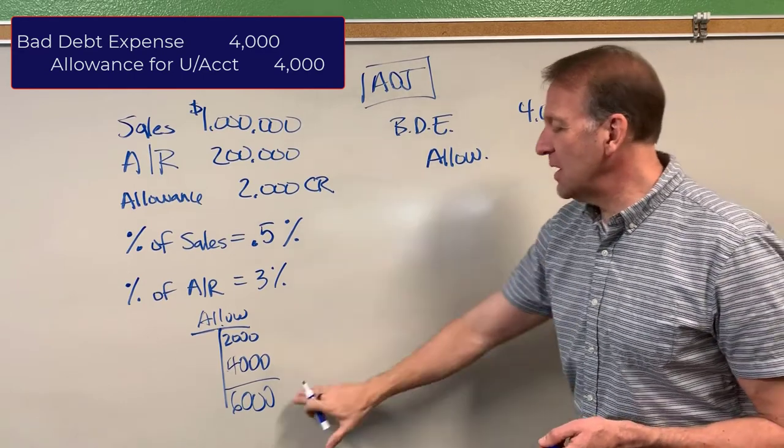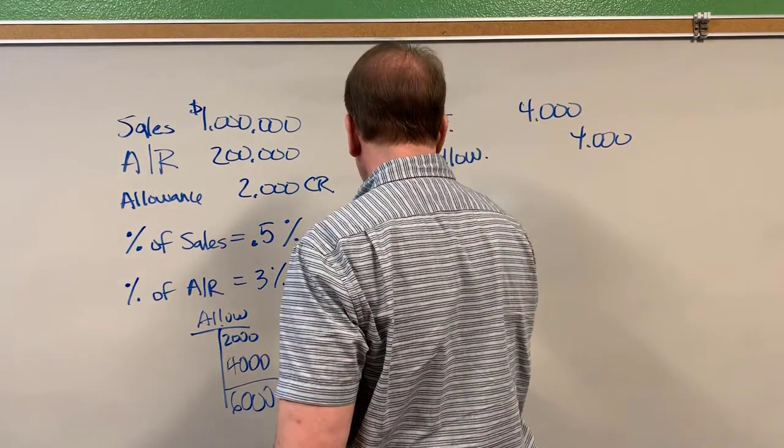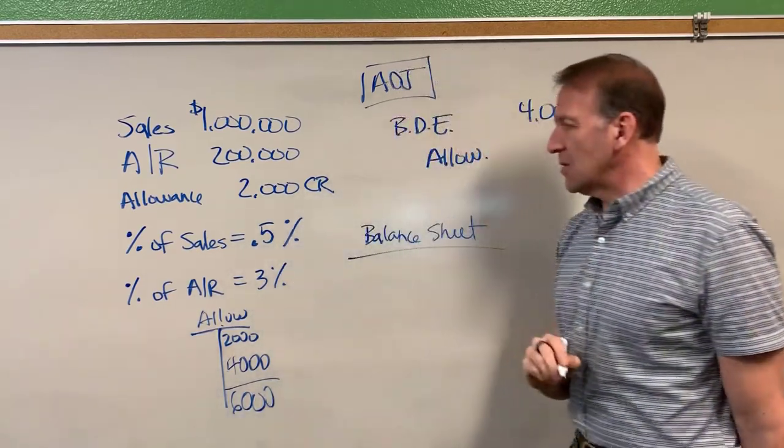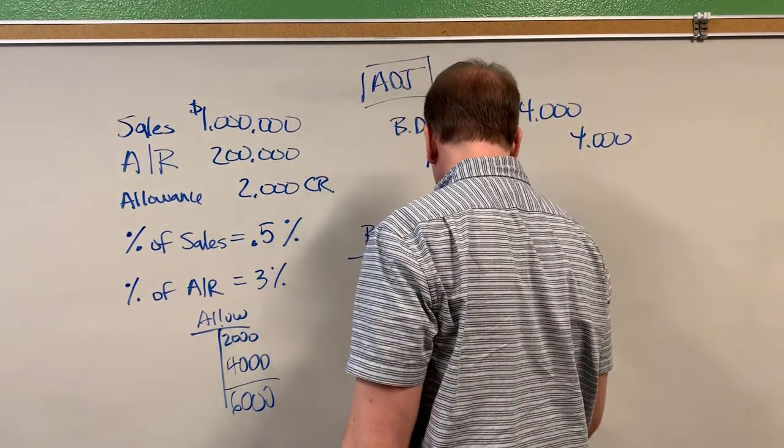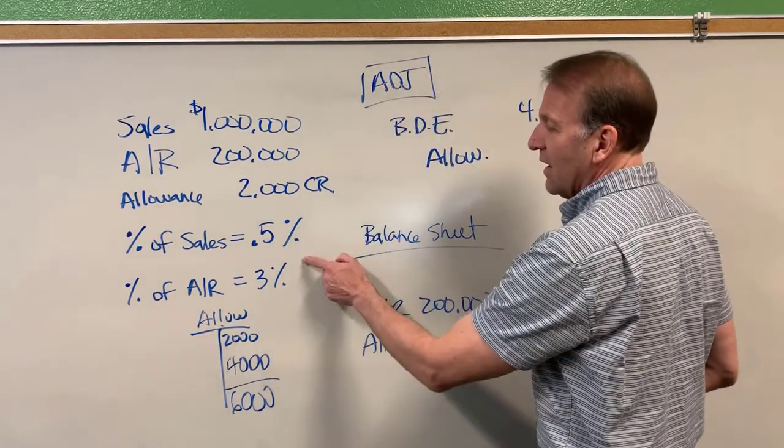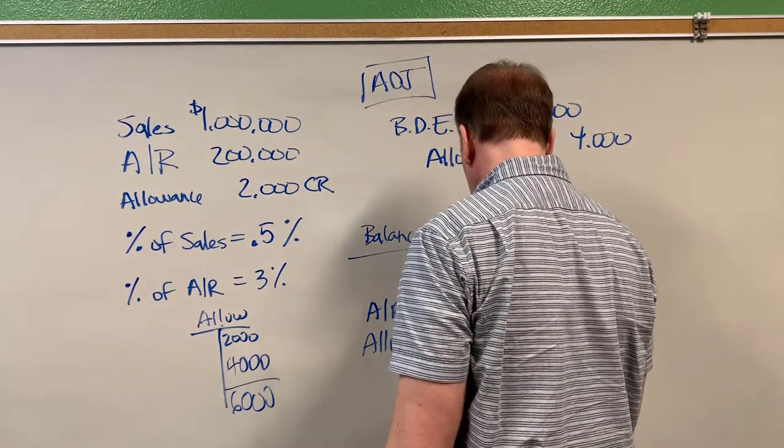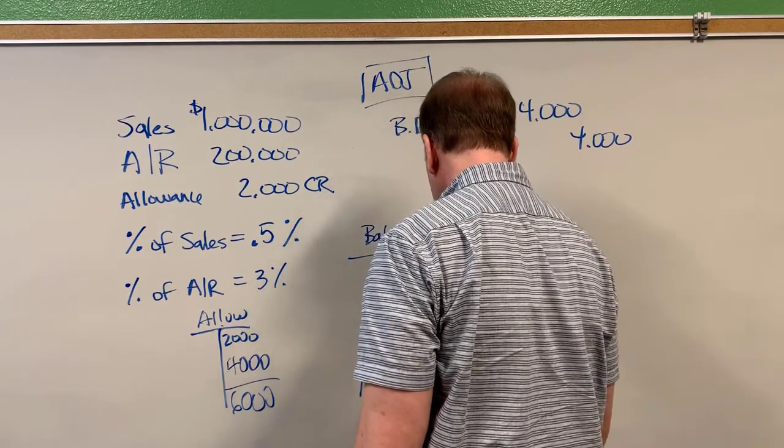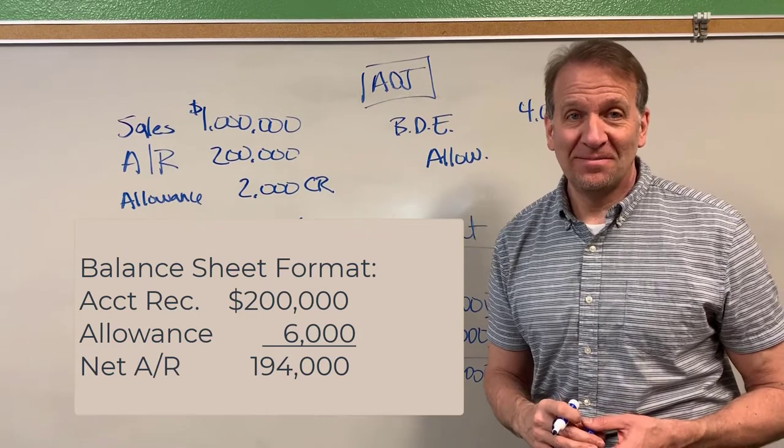Alright so here's our adjusting entry. So now with this adjusting entry that truly is the balance in the allowance. Now let's take a look at our balance sheet format now if we're using the percent of accounts receivable method. The accounts receivable in the balance sheet would be two hundred thousand dollars and our allowance would be six thousand.